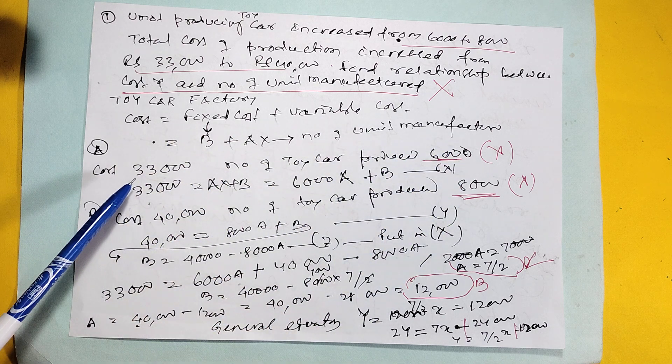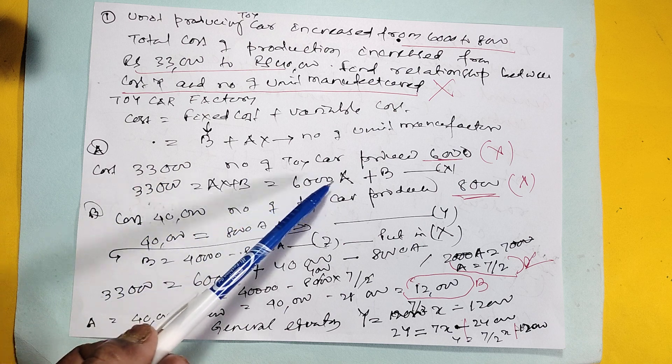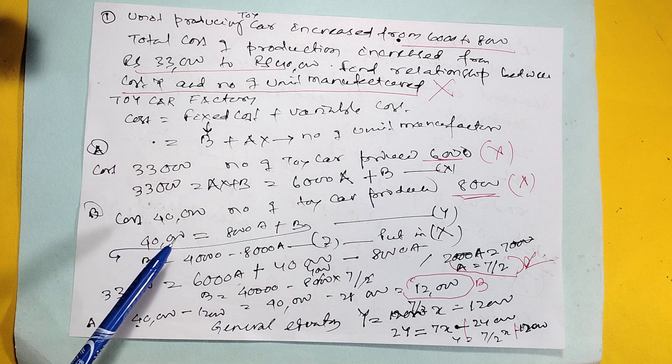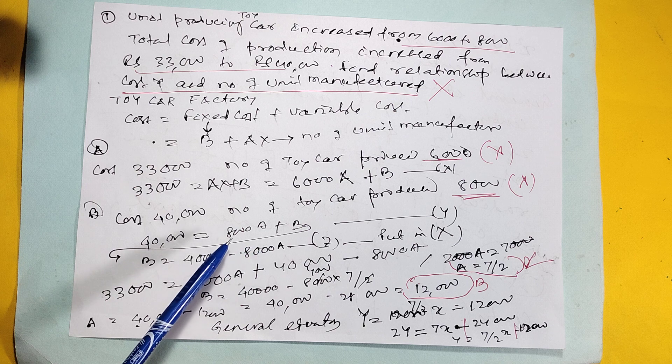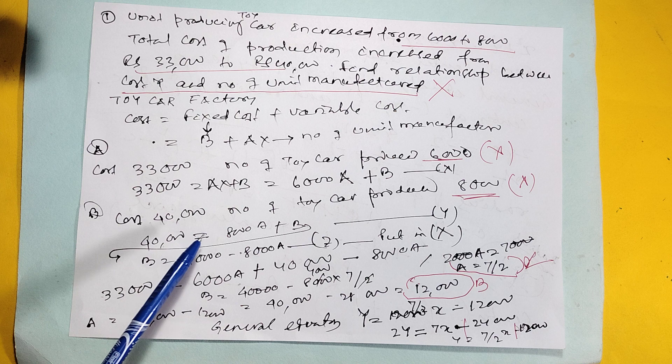If you solve it, first case: 33,000 equals 6,000A plus B. Second case: 40,000 when number of toy cars manufactured is 8,000, so 40,000 equals 8,000A plus B.